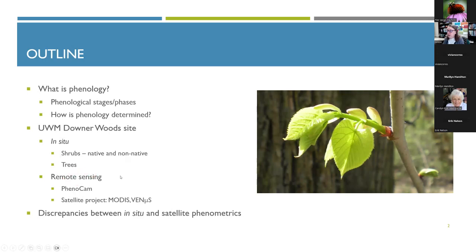We monitor native and non-native shrubs and compare them, because some phenology of non-native shrubs can provide a competitive advantage against native shrubs. Then I'll talk about remote sensing for phenological data — phenocams, which are just like webcams but monitoring phenology. I'll also discuss two satellite projects: MODIS, a very common large-scale satellite, and VENUS, a smaller higher-resolution satellite that gives more detailed phenological information.